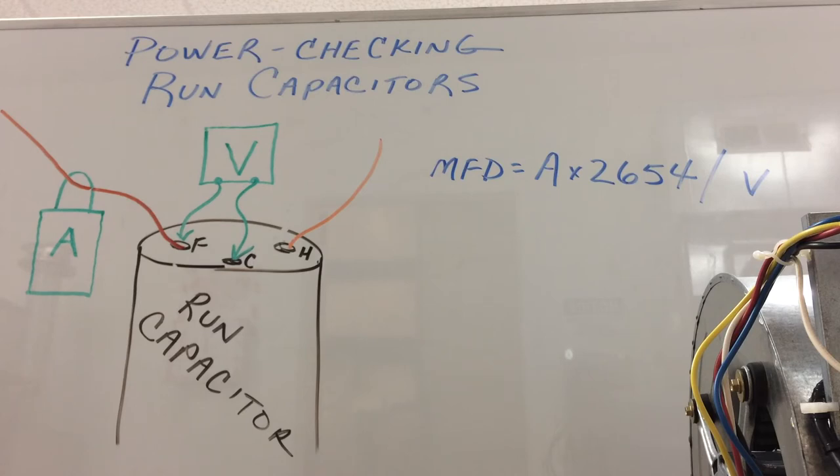So, we're not ever on the dual capacitor going to measure the current draw on the common side. We're always going to dedicate that to the fan wire or the compressor wire when we're checking that respective side of the dual capacitors. Try this out.